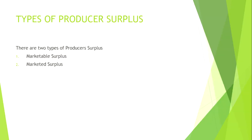Now, types of producer surplus — the producer surplus are of two types: first, marketable surplus; second, marketed surplus.